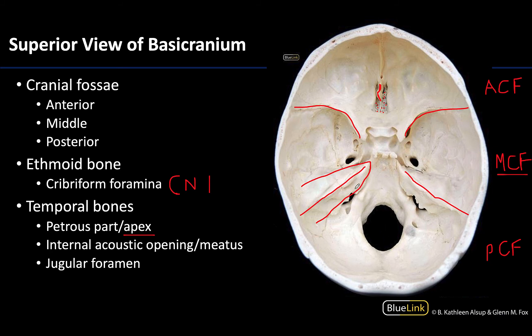In this region you will have the internal acoustic opening that leads into the internal acoustic meatus, similar to what we saw on the external side. This leads into the middle and inner ear regions, and two cranial nerves enter here. Cranial nerve seven, the facial nerve, enters the middle ear region and eventually exits the skull. Cranial nerve eight, the vestibulocochlear nerve, also enters this region but never exits — it serves its function entirely within that area.